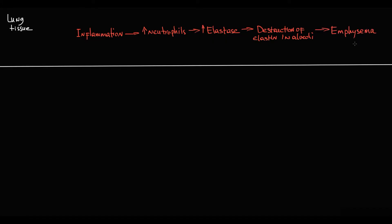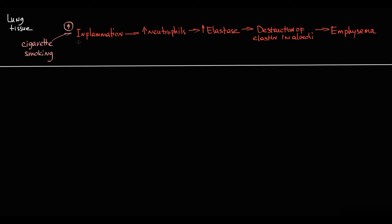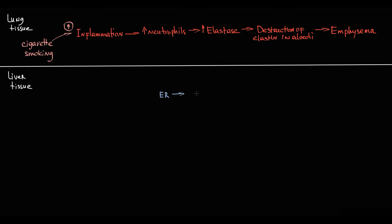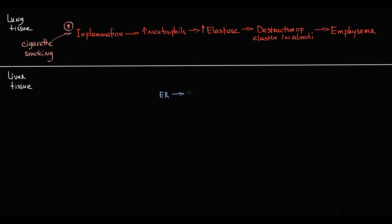One of the major risk factors of emphysema is cigarette smoking, because smoking provokes additional inflammation in the lung tissue. To control this very aggressive enzyme, hepatocytes in the liver produce a specific protein called alpha-1-antitrypsin in the endoplasmic reticulum.